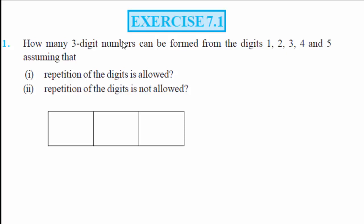Exercise 7.1. How many 3-digit numbers can be formed from the digits 1, 2, 3, 4, and 5? The first case assumes that repetition of digits is allowed, and the second case is that repetition of digits is not allowed.